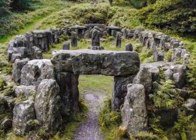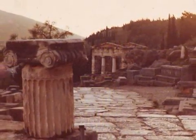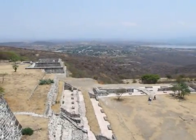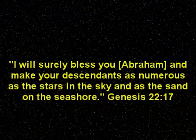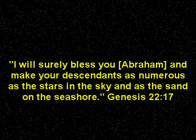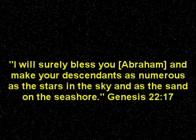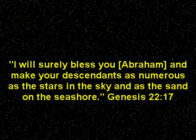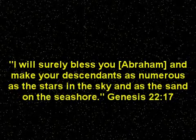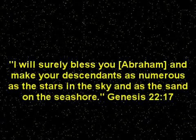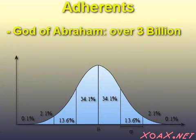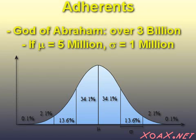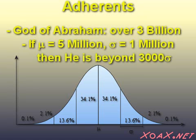We could look at this historically over time, too, and we would see that the worship of most other gods, like Zeus or Odin, began and ended with the particular cultures they arose from. By contrast, the god of Abraham continues to grow in adherents even after 3,000 years. Whether we measure by population or time, the god of Abraham is a statistical anomaly. The god of Abraham currently has more than 3 billion adherents. So if we measure the number of adherents for all gods currently and suppose a mean of 5 million and a standard deviation, or sigma, of 1 million, then the god of Abraham is more than 3,000 sigma above the mean.